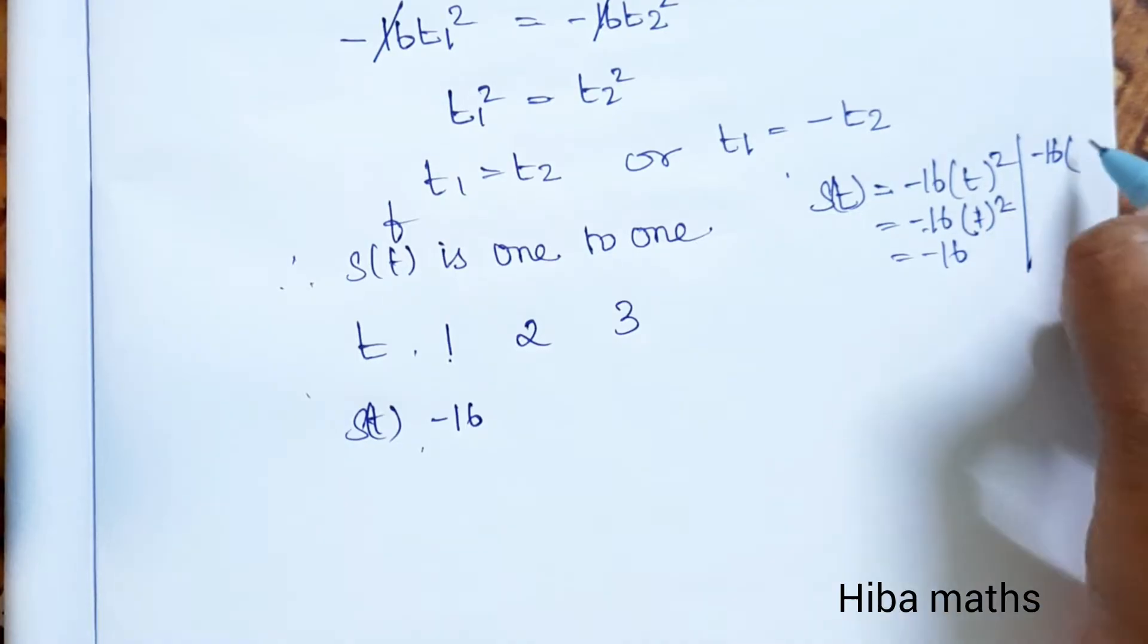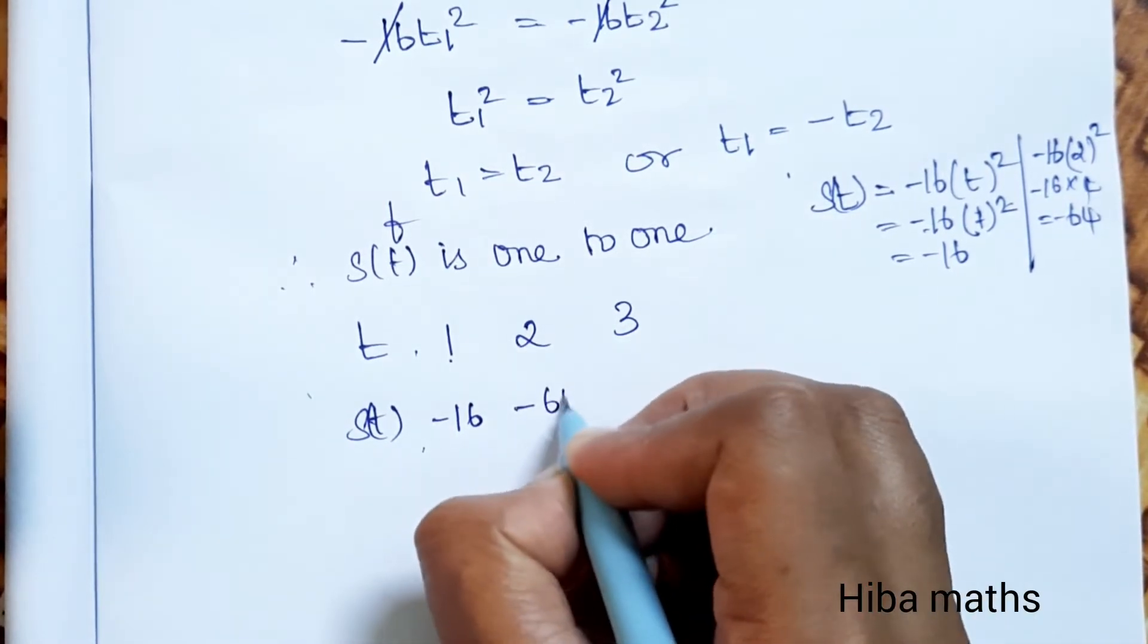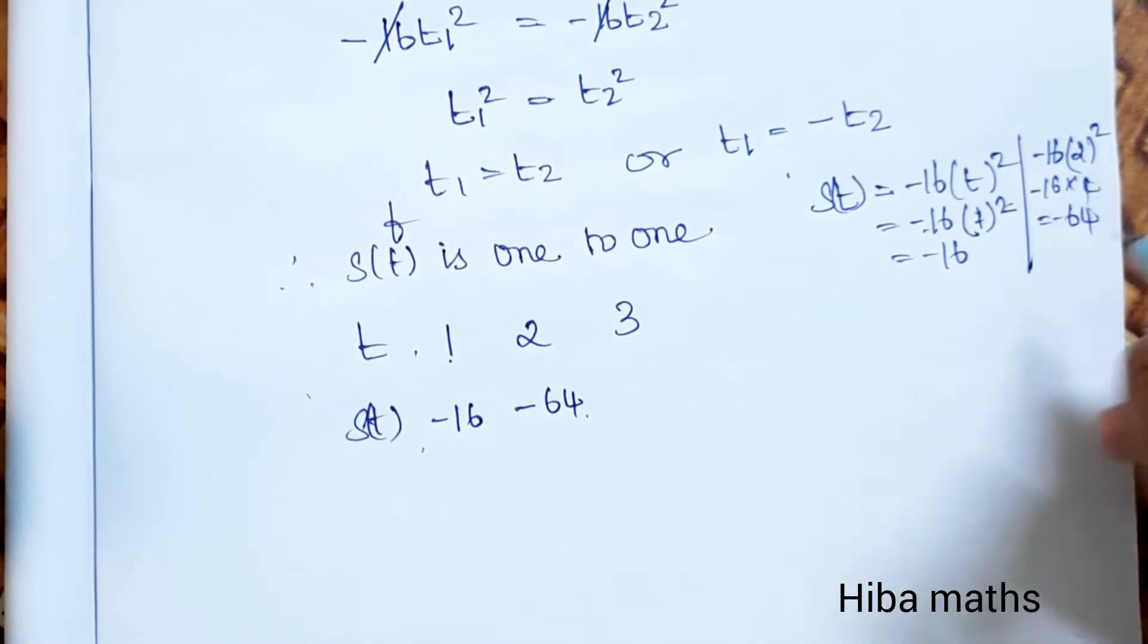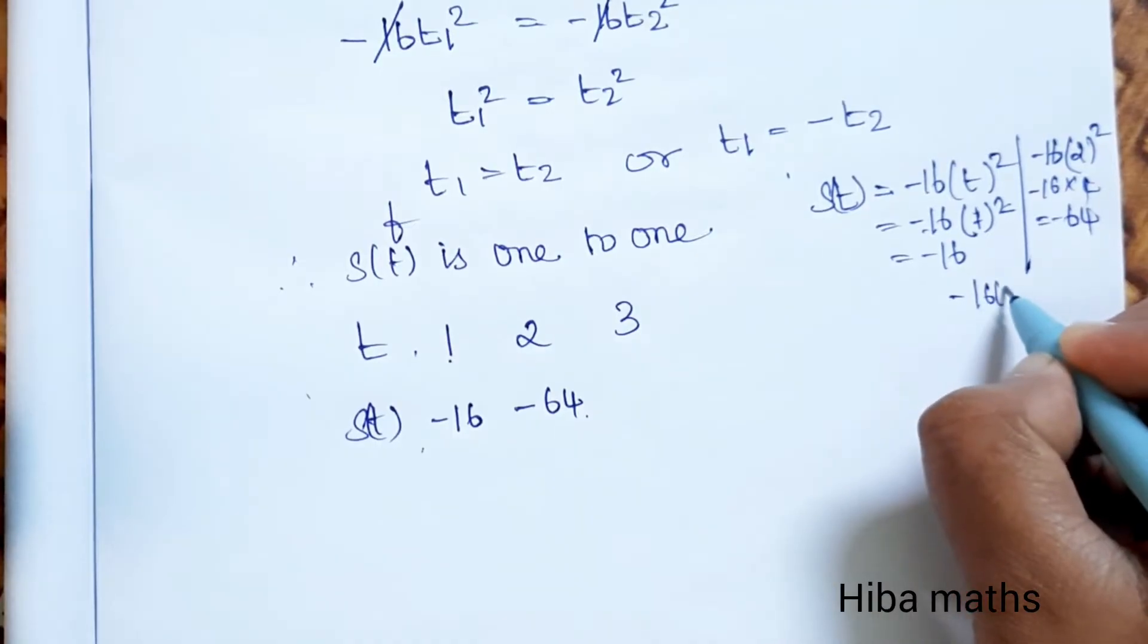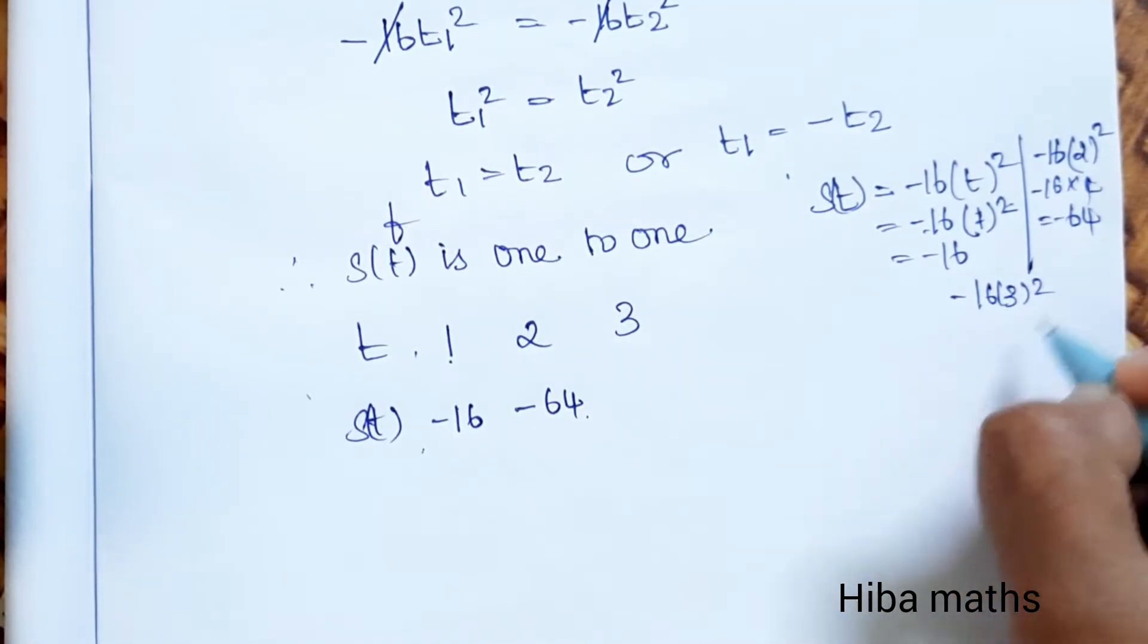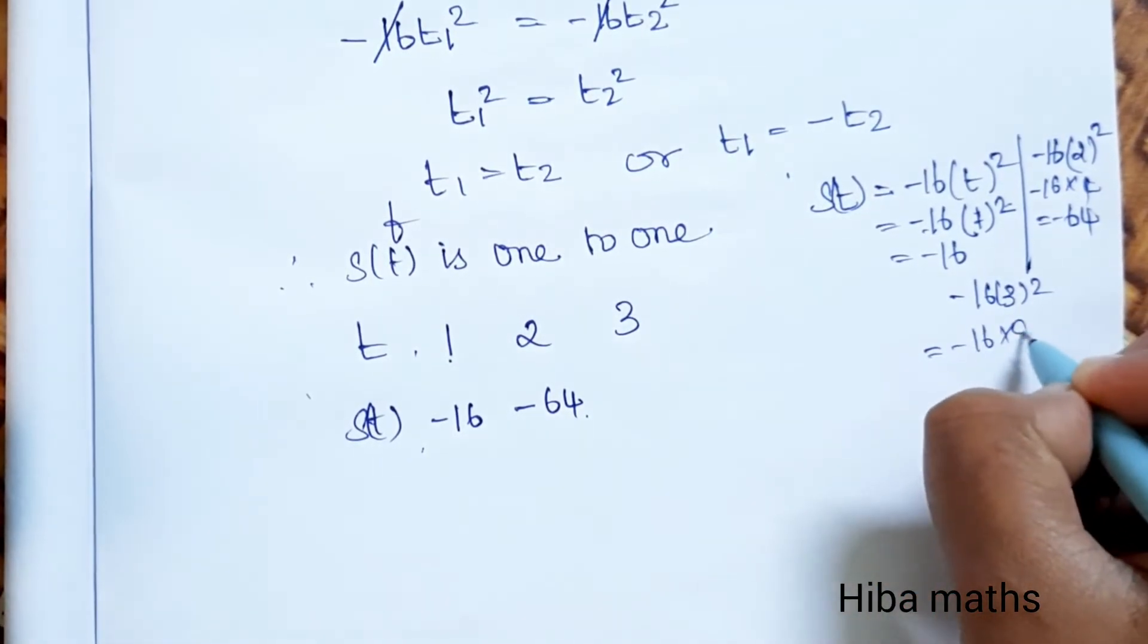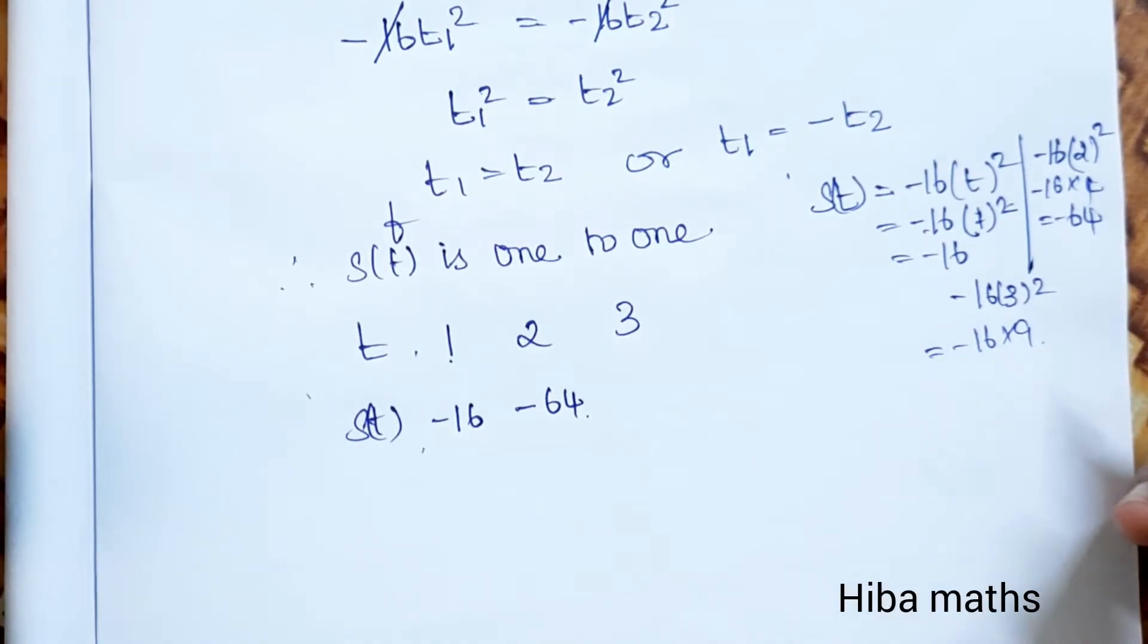For t = 2: s(2) = -16(4) = -64. For t = 3: s(3) = -16(9) = -144.